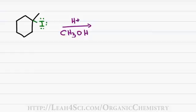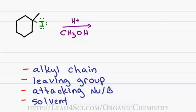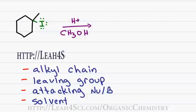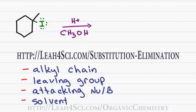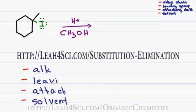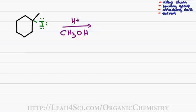For all substitution and elimination reactions, you want to analyze four things that will help you determine which reaction takes place. The four things we'll look at are the alkyl chain, leaving group, attacking nucleophile or base, and solvent. We'll keep this list on the side so that we can refer to it, giving us room to work through the reaction.